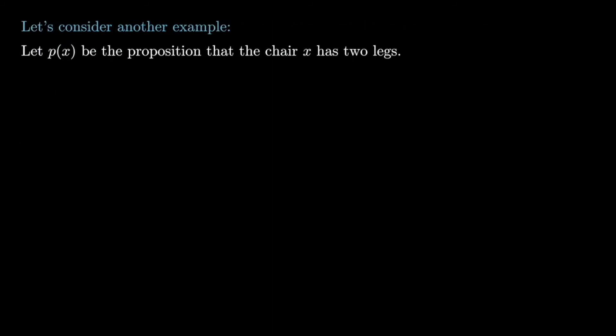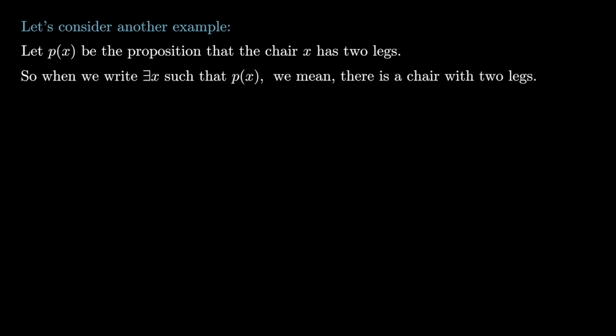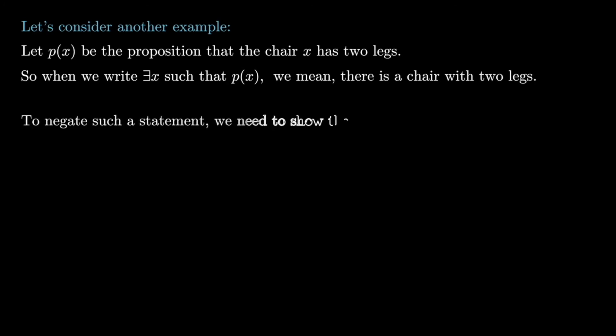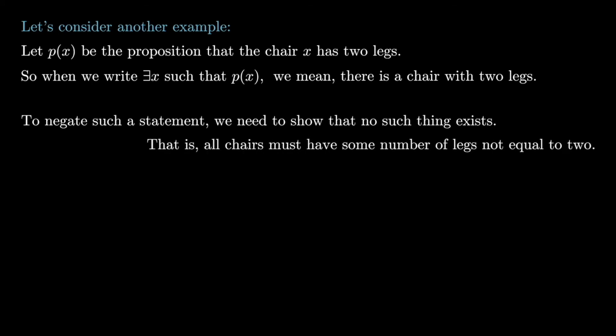Now suppose P(x) is the proposition that chair x has two legs. The statement 'there exists x such that P(x)' means there is a chair with two legs. To negate this we need to show no such thing exists — in other words, all chairs must have some number of legs not equal to two. The negation of an existential quantifier is a universal quantifier: the negation of 'there exists x such that P(x)' is 'for all x, ¬P(x).'